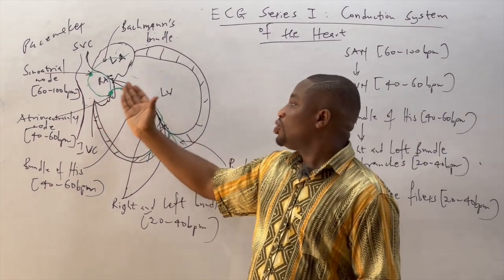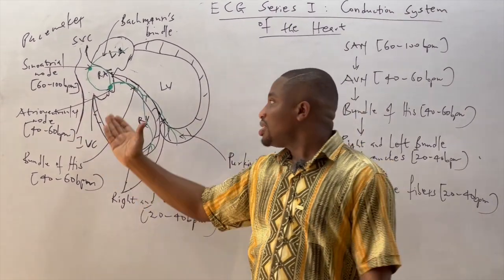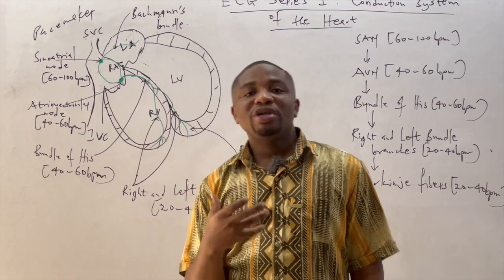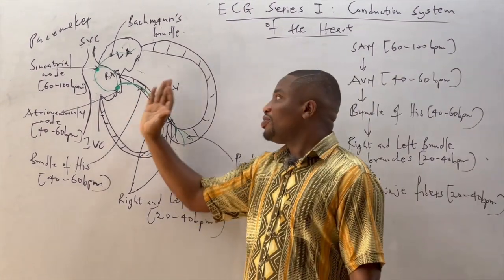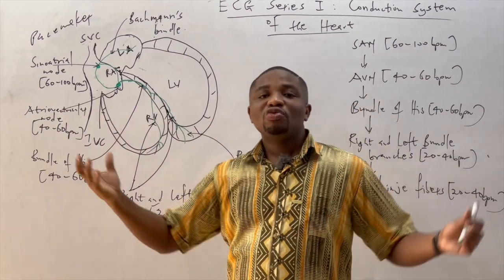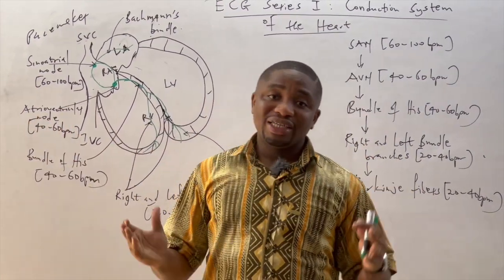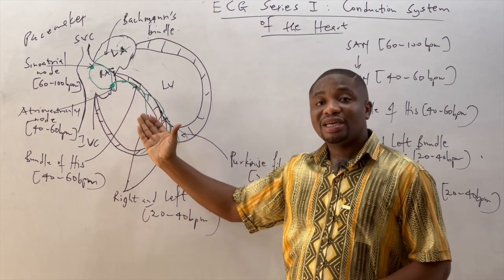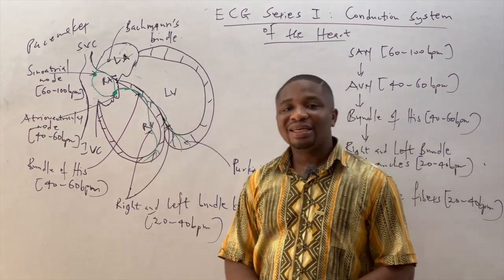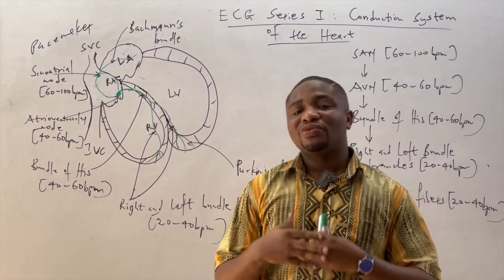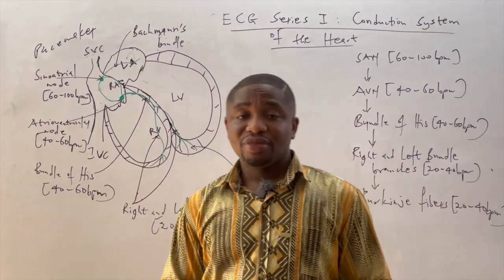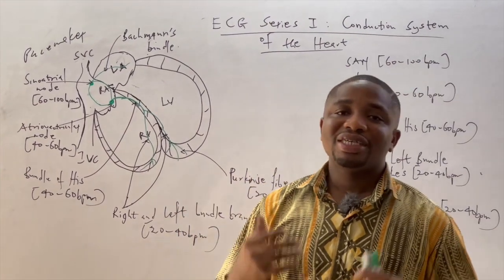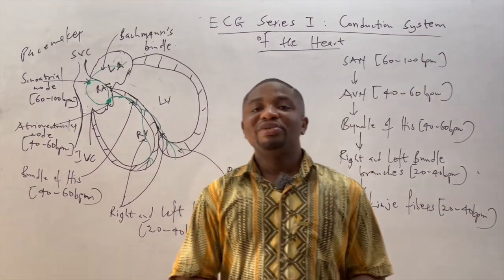When the impulses have been transmitted to the atrioventricular node, it also transmits them into the bundle of His. The bundle of His has the capacity of generating its own impulses at a rate of 40 to 60 beats per minute. From the bundle of His, two branches arise — the right and left bundle branches — which end up in the ventricles as the Purkinje fibers. In the absence of impulses from the bundle of His, the right and left bundle branches as well as the Purkinje fibers can generate their own electrical impulses at a rate of 20 to 40 beats per minute.